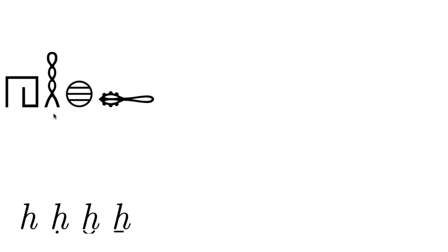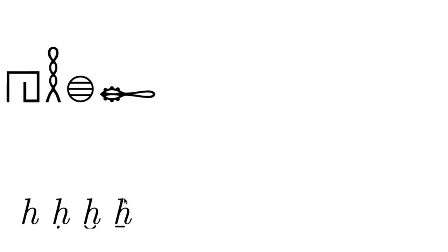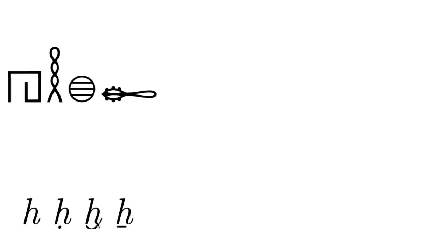This rope here is the second H. We write it with a dot underneath in transliteration, and you pronounce it 'ha.' The third H sounds like a guttural — it's like the sound in 'loch.'